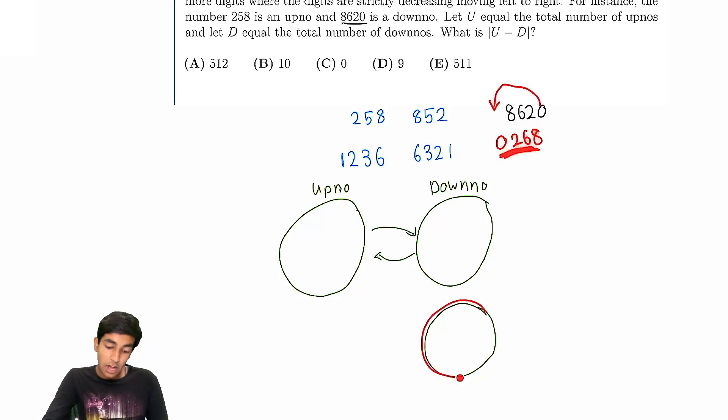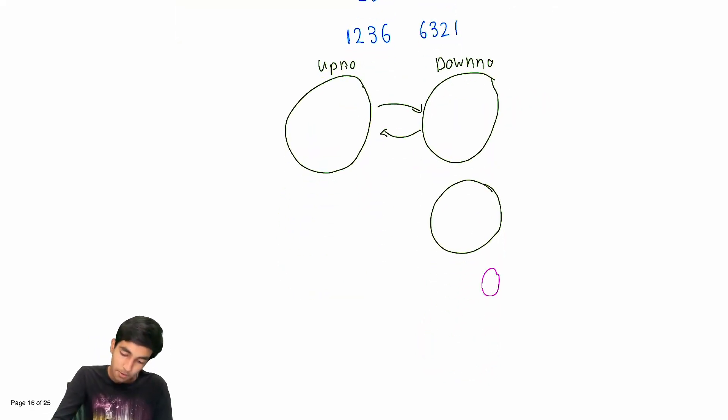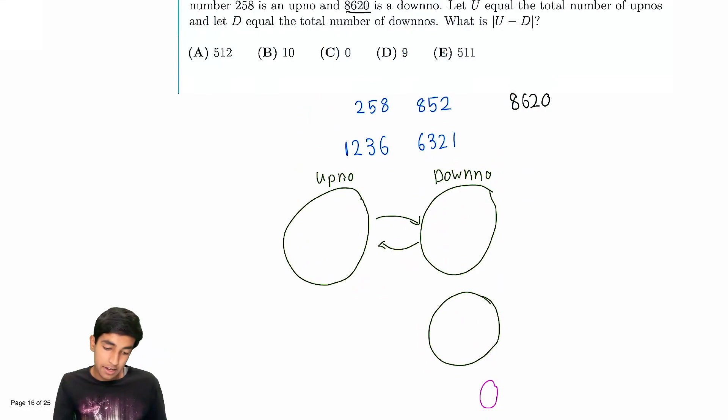So the number of downnos in this group are going to be the number of downnos that end in a zero. How many downnos end in a zero?